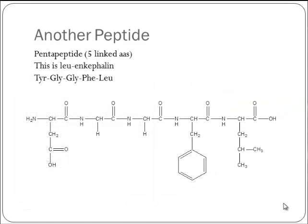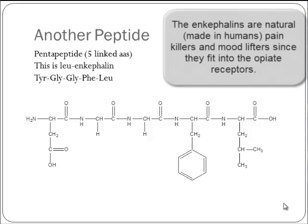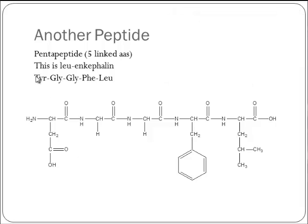Here's another peptide — a pentapeptide. Five amino acids have linked together. This particular one is called leu-enkephalin. The enkephalins are the natural endorphins — molecules naturally made that seem to fit into the opiate receptors in our brains and make us feel relaxed and free of pain. It's part of what's responsible for what they call runner's high. The five amino acids are tyrosine, glycine, glycine, phenylalanine, and leucine.